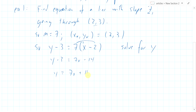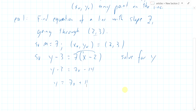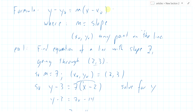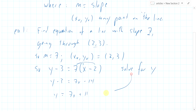And so there's the equation of the line of slope seven going through the point two comma three. We used this formula to set it up, and then solving for y gives us the slope-intercept form. You can sketch it — the y-intercept is 11 — and find the x-intercept and other things you want to know about it.